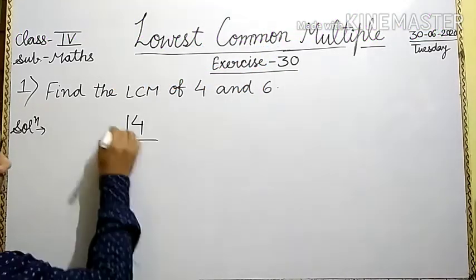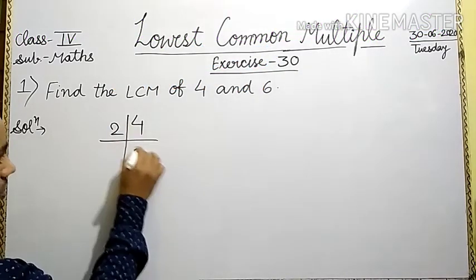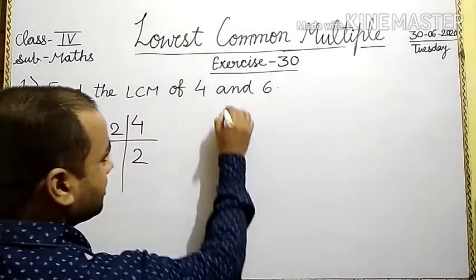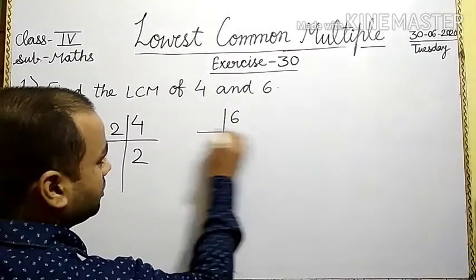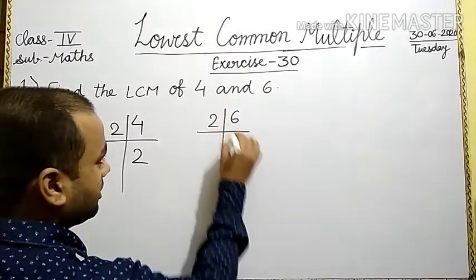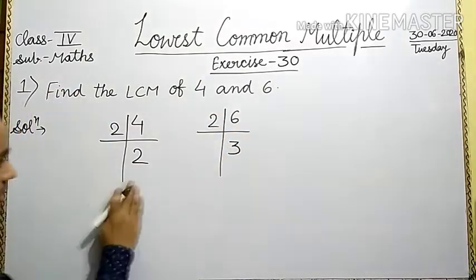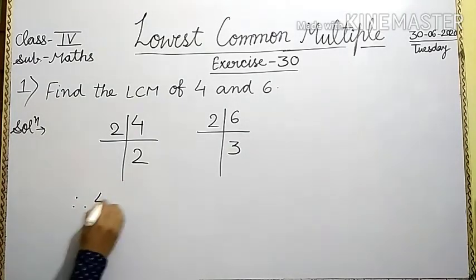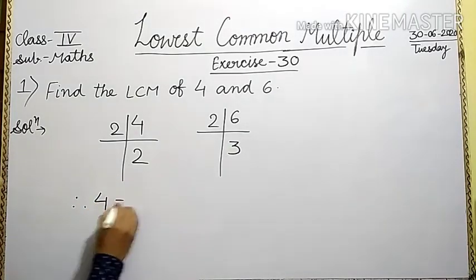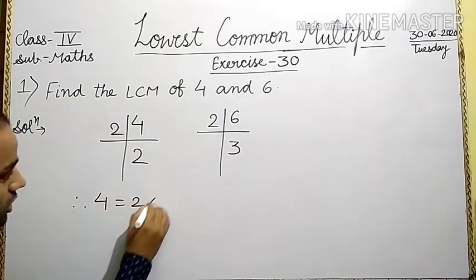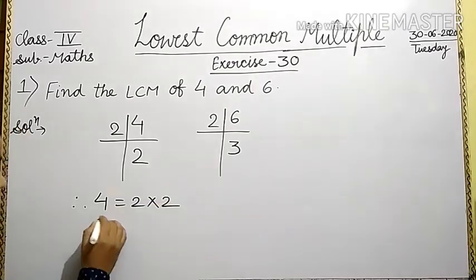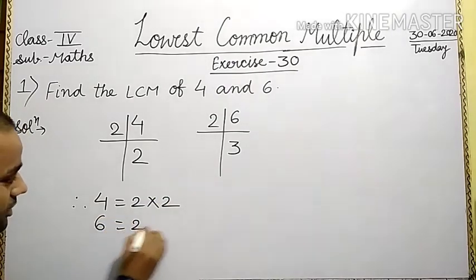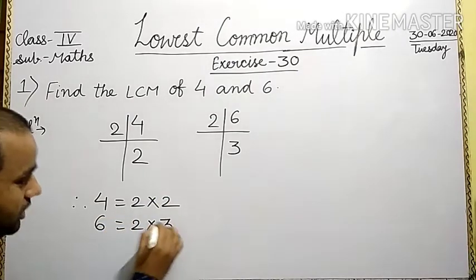2 divides 4. Is it clear? Next, 6: 2 divides 6 to give 3. Lastly, we write: 4 is equal to 2 into 2. And 6 is equal to 2 into 3.